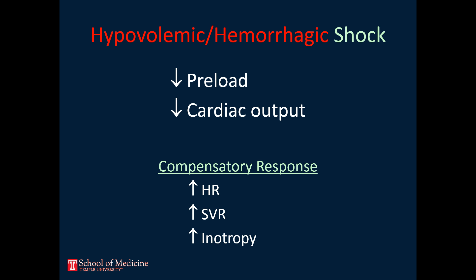In hemorrhagic shock, cardiac output is low because of low preload. In an attempt to compensate and maintain cardiac output, the sympathetic nervous system increases heart rate, systemic vascular resistance, and cardiac contractility.